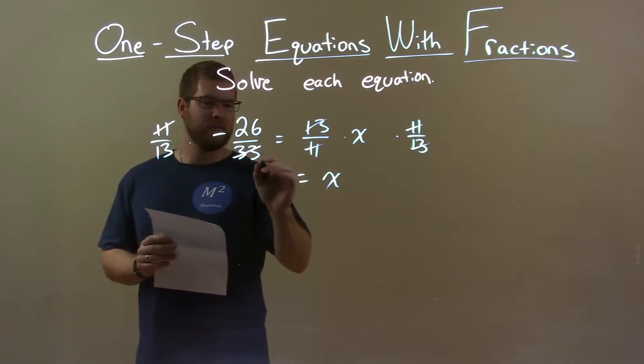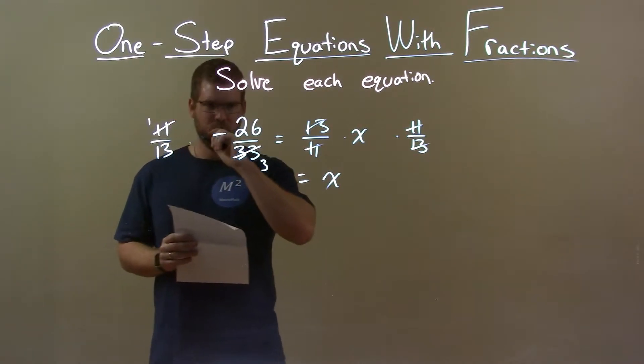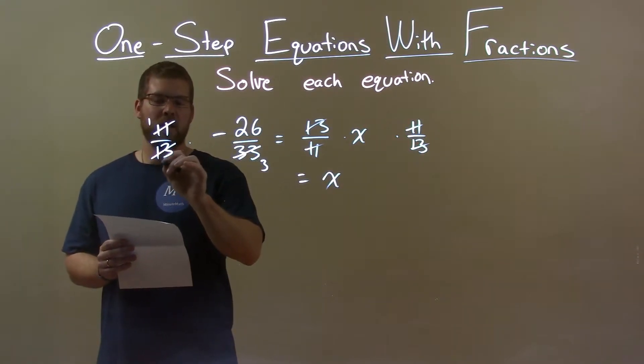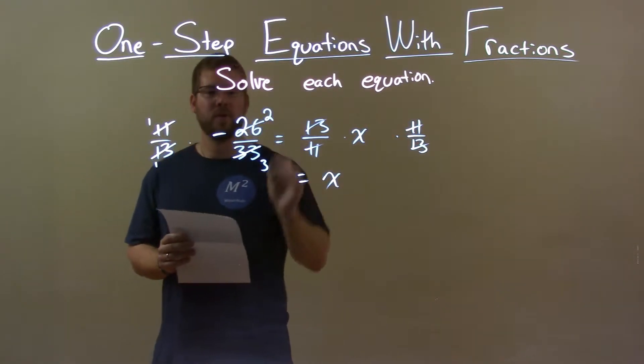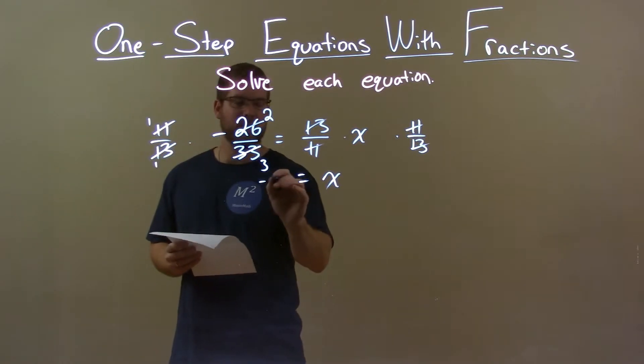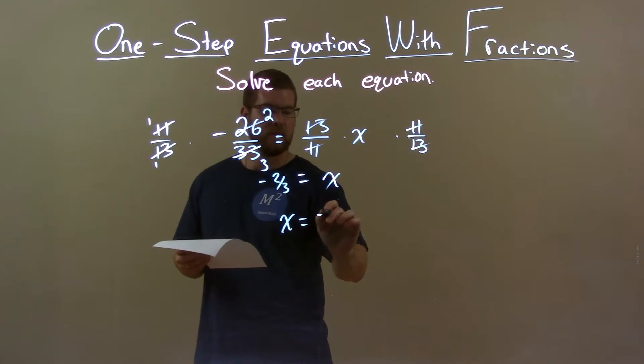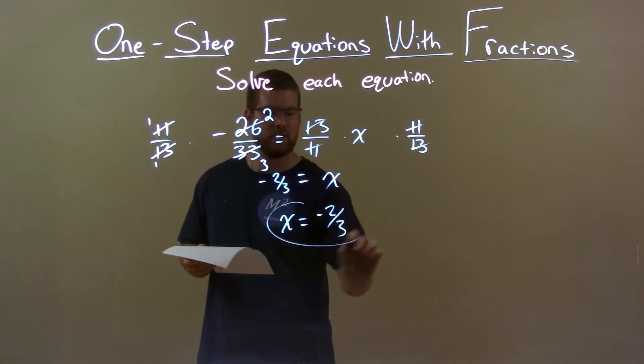Both of these are divisible by 11. This is a 3 and this is a 1. 13 goes into 26 two times, right? So 1 and then 2 up here. And so our final answer is pretty easy as a negative 2 thirds. So we can rewrite that to have x come first as x equals negative 2 thirds.